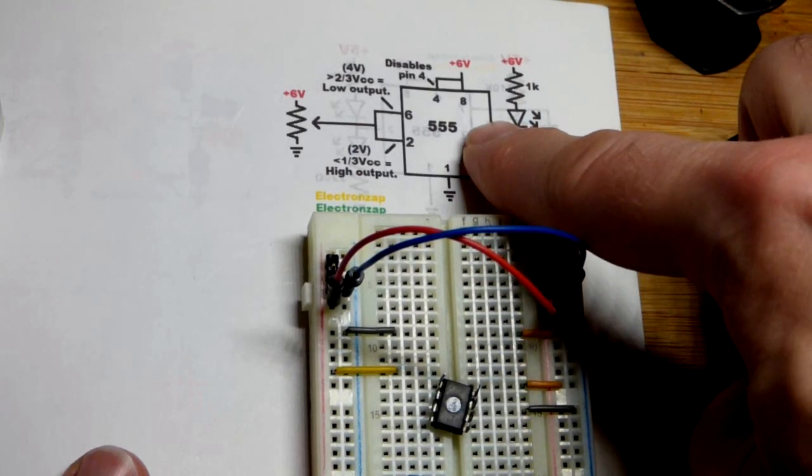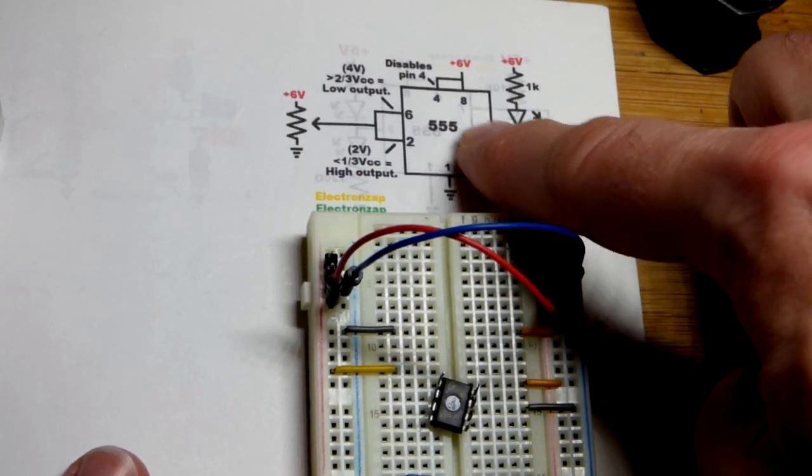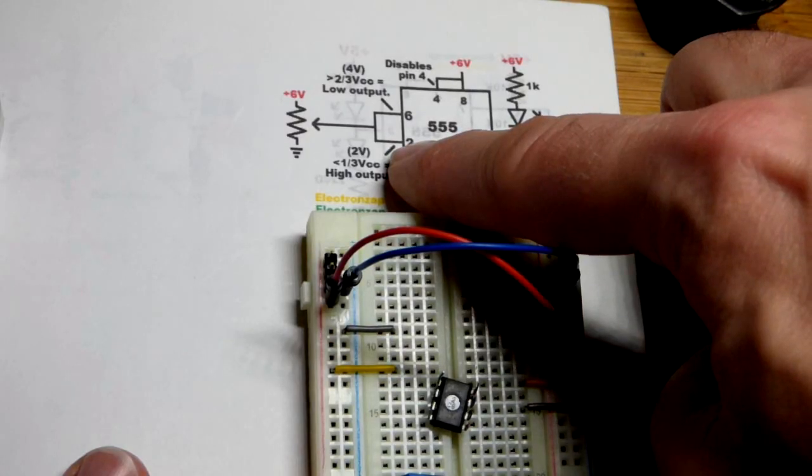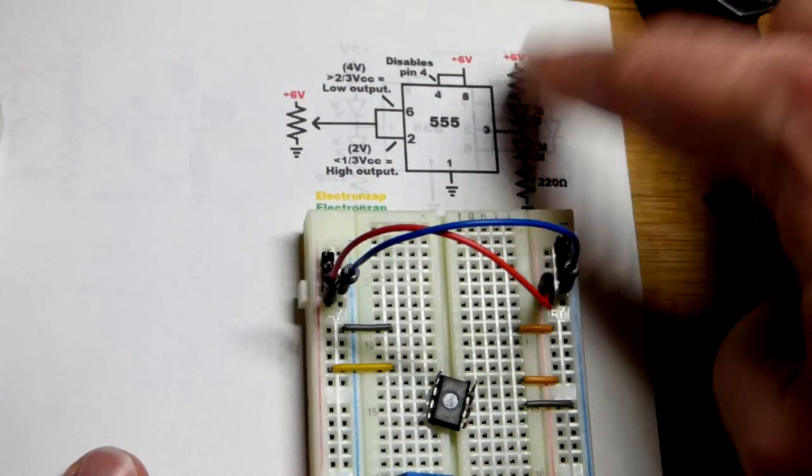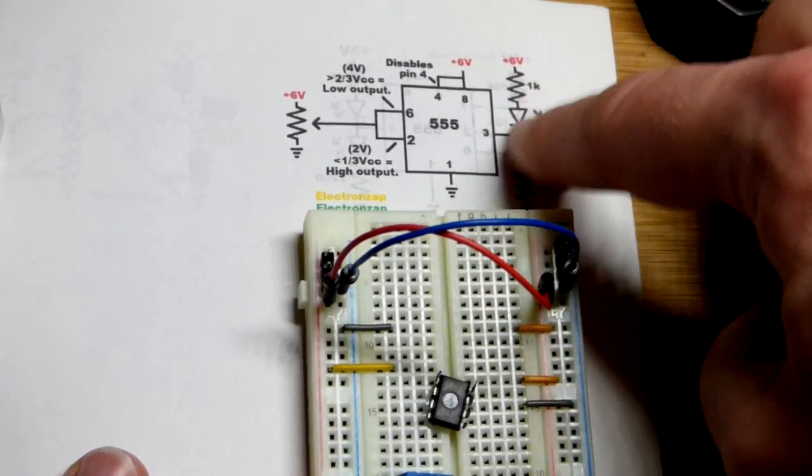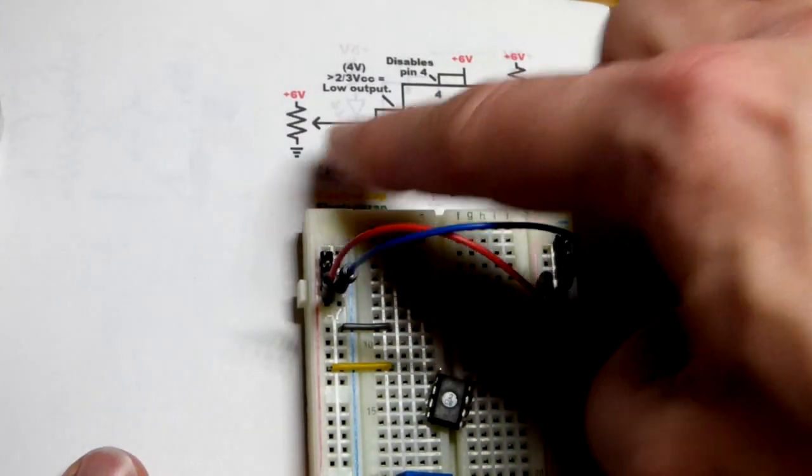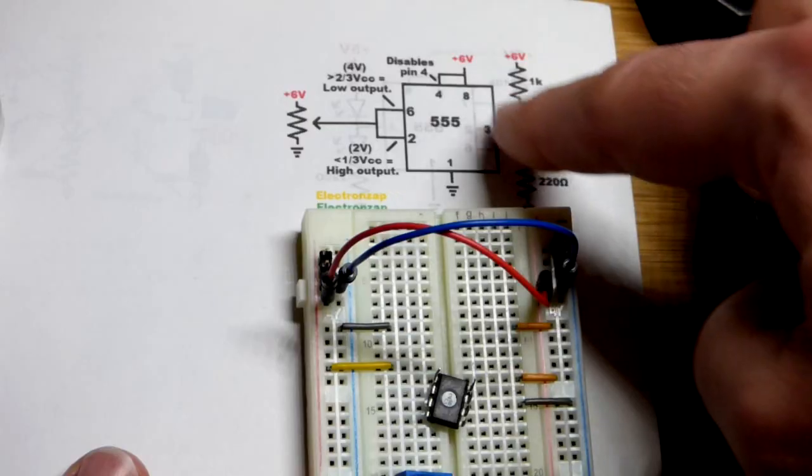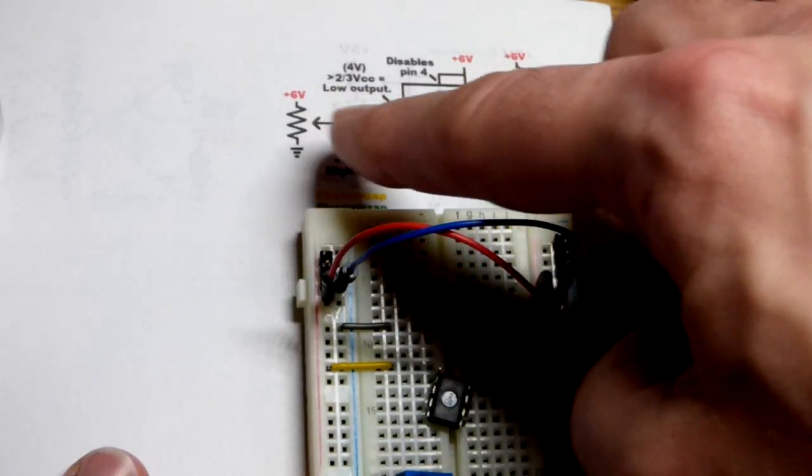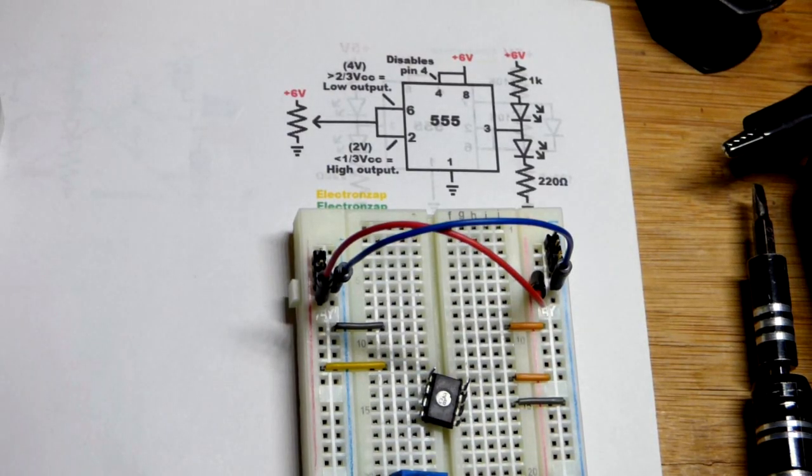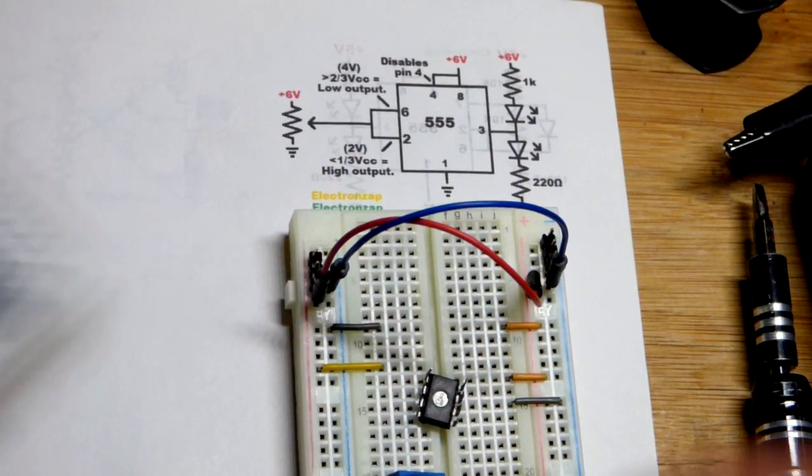Now we're going to do a step-by-step build of the 555 timer wired as a Schmidt trigger inverter. If you get a high enough input voltage, you get a low output right there that connects to ground. You get a low enough voltage, less than one-third supply voltage, you get a high output. And whatever middle ground voltage you set, the output will stay wherever it is, between one-third and two-thirds supply voltage.